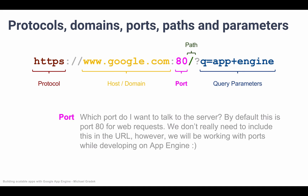Then comes the port. Servers have all sorts of ports and at each port there may be a different service running. The port by default for web servers is port 80, so we don't even need to type this when requesting a domain name or sending requests to a server, because by default it's going to be 80. Even when we type a domain name in our browser, the browser assumes it's port 80.